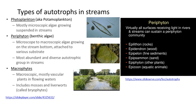Periphyton are composed of microscopic or macroscopic organisms found around or attached to various substrates. They can be further classified into epilithon on rocks, epidendron on wood, epipsammon on fine sediments, epipsammon on sand, epiphyton on other plants, and epizoon on aquatic animals.